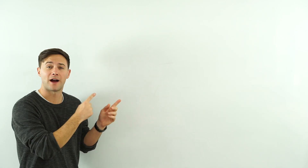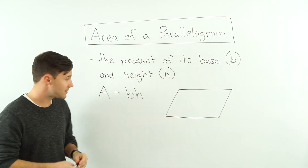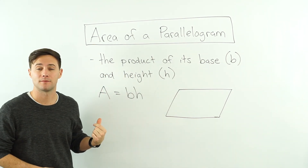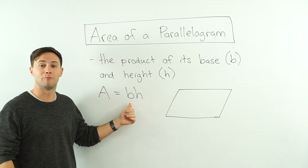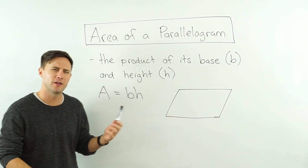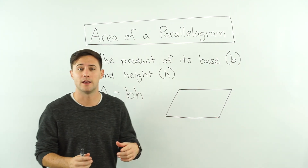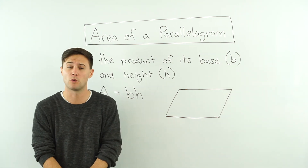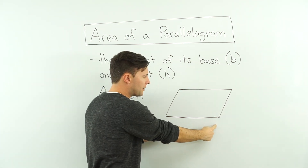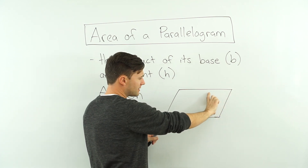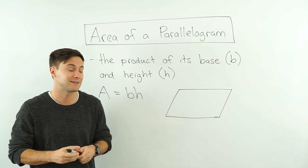So now let's talk about how to actually find the area. The area of a parallelogram is just the product of its base and its height, and we know product means multiplication. So area of a parallelogram equals base times height. Notice we don't use length and width, and there's a reason for that. If you look at this shape and I ask you what's the length and the width, you'd get confused — because it doesn't have right angles. We use base and height.